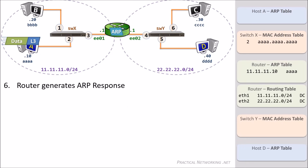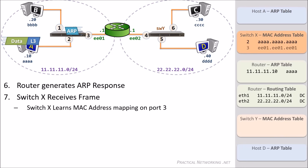Next, the router will generate an ARP response. Since the router knows Host A's MAC address, it can send the response directly back to Host A. The ARP response will arrive at SwitchX on port 3. The switch will learn that the device on port 3 owns the MAC address EEE01. This frame is a unicast frame destined directly for Host A, which means it has a destination MAC address of AAAA. Since the switch has this entry in its MAC address table, it will know that the frame needs to be forwarded out port 2.